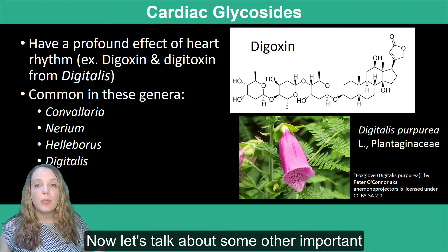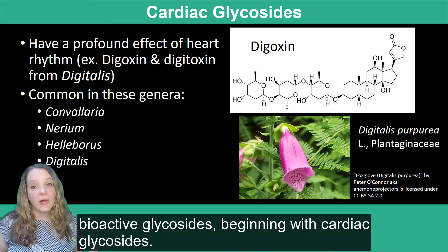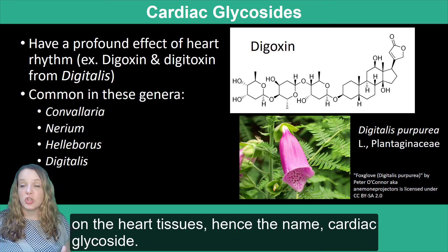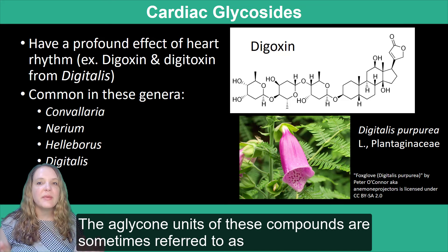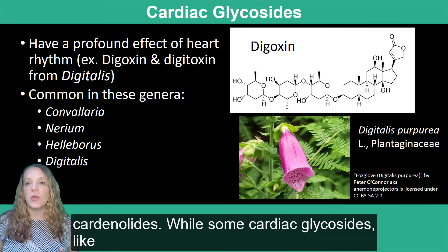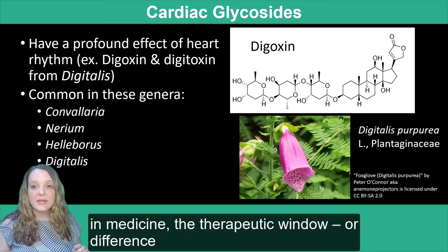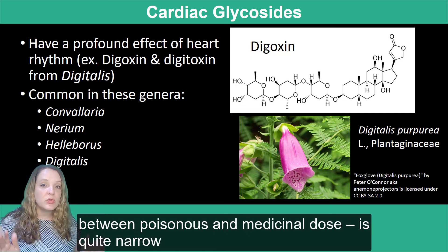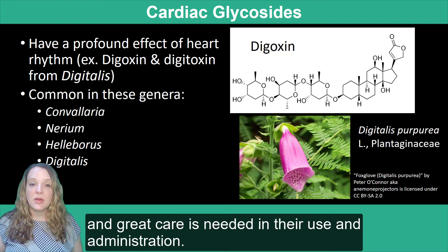Now let's talk about some other important bioactive glycosides, beginning with cardiac glycosides. These are compounds that have profound effects on the heart tissue, hence the name cardiac glycoside. The aglycone units of these compounds are sometimes referred to as cardenolides. While some cardiac glycosides, like digoxin shown here, have proven very useful in medicine, the therapeutic window — or difference between poisonous and medicinal dose — is quite narrow, and great care is needed in their use and administration.